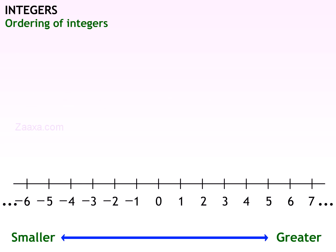Always remember that numbers that lie to the right are greater than numbers that lie to the left. Now, which number is greater — 2 or minus 4? 2 is greater than minus 4 as it lies to the right of minus 4.